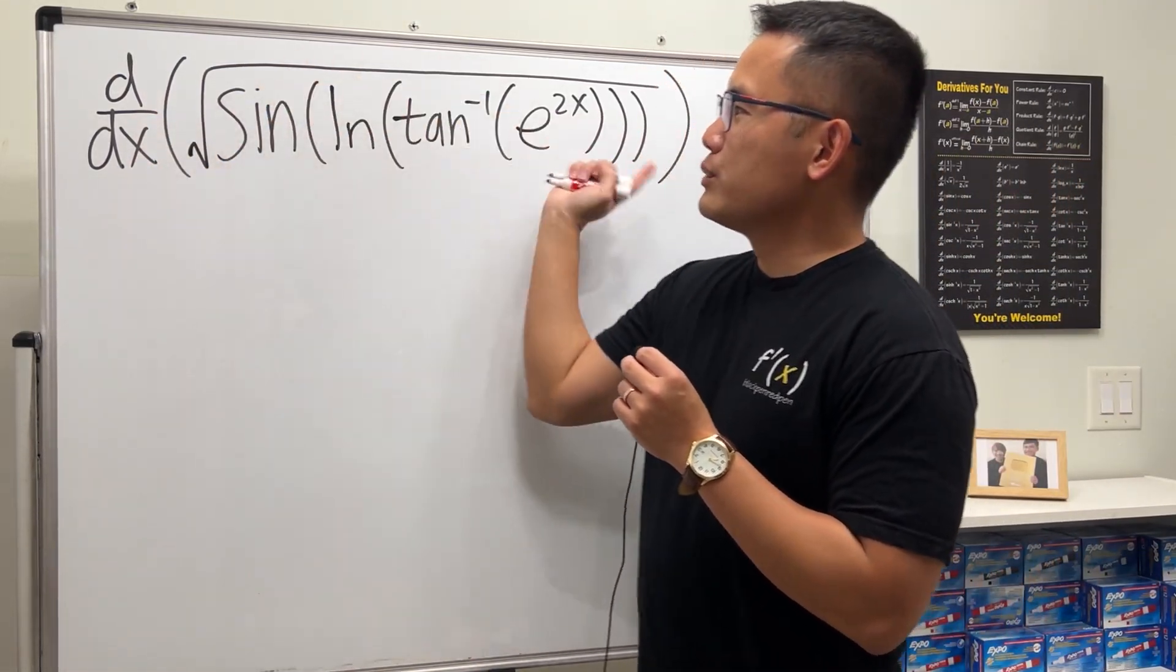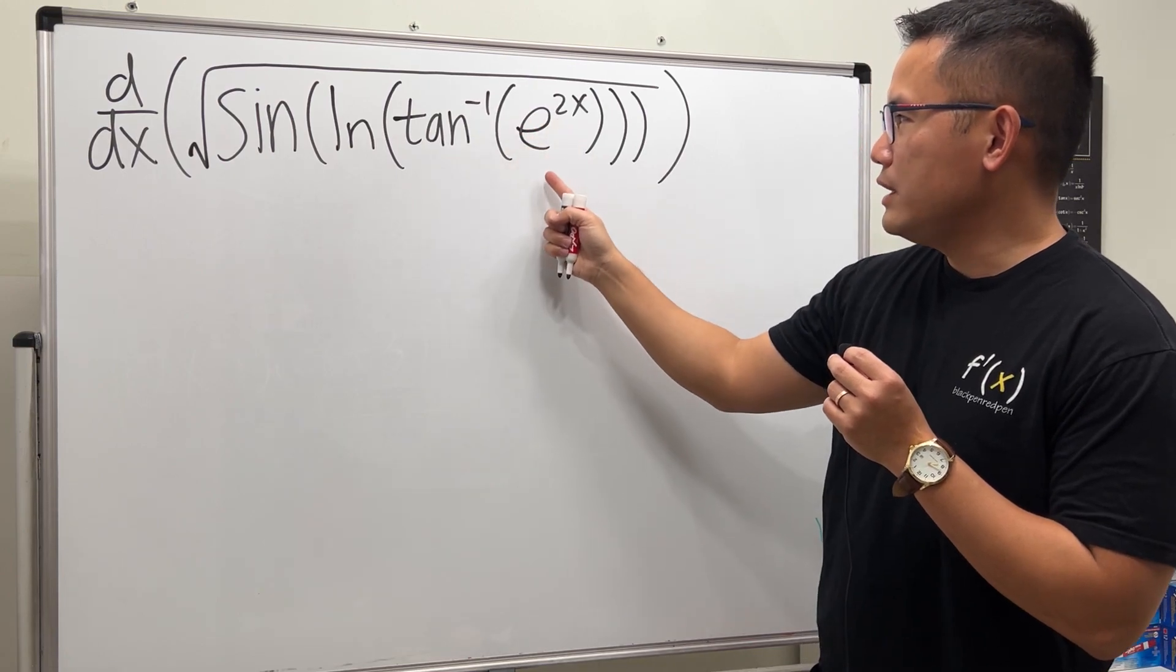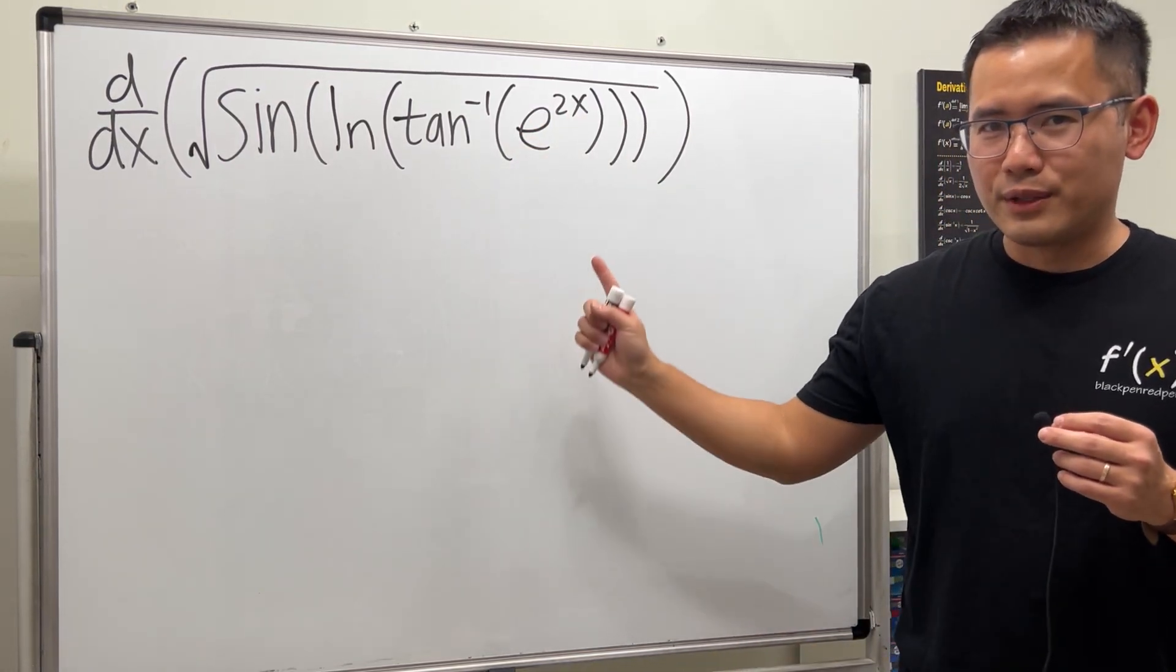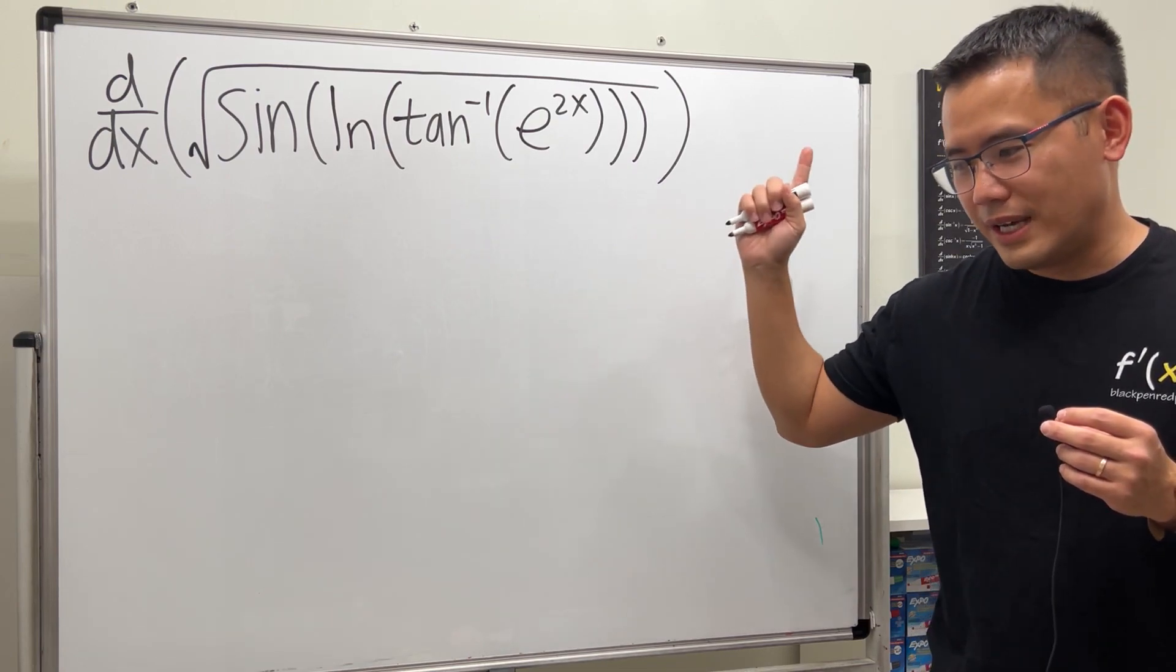We are going to differentiate the square root of sine of ln of inverse tangent of e to the 2x. It's not so bad, but if you want to try it first, right now it's the time for you to do so. Pause the video and give it a try.